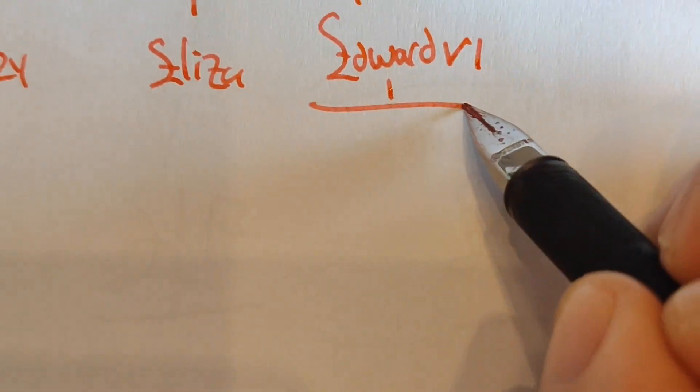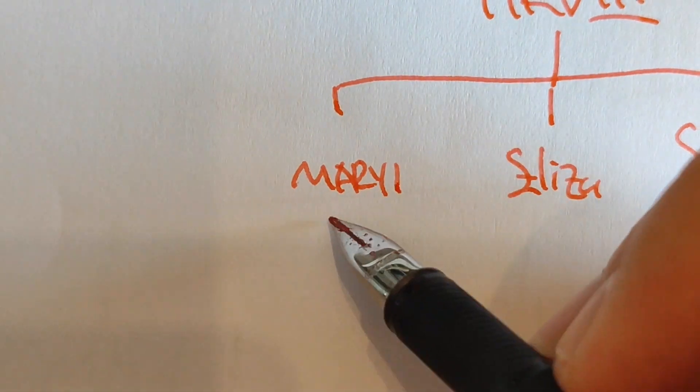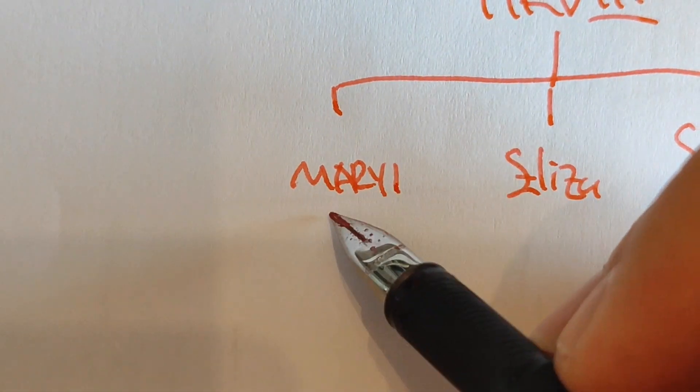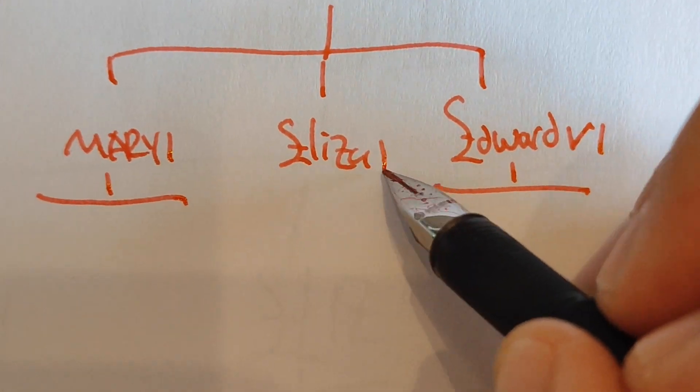But he too died childless, which meant that the throne went to his eldest half-sister Mary, who became Mary I. When she died childless too, the throne actually went to her half-sister Elizabeth I.